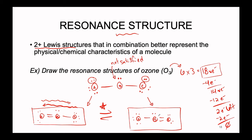This is what we call a resonance structure. The combination of our two extreme examples with a reversible arrow showing that the two are flipping back and forth — this gives us a better idea for the actual Lewis structure of the molecule. We don't have one single bond, we don't have one double bond; we're somewhere in between these two structures.